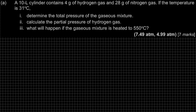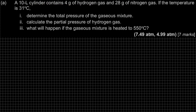Question A: a 10-liter cylinder contains 4 grams of hydrogen gas and 28 grams of nitrogen gas. If the temperature is 31 degrees Celsius, question 1 - determine the total pressure of the gas mixture. First thing first, I need to extract the information. We have volume, mass, and temperature.